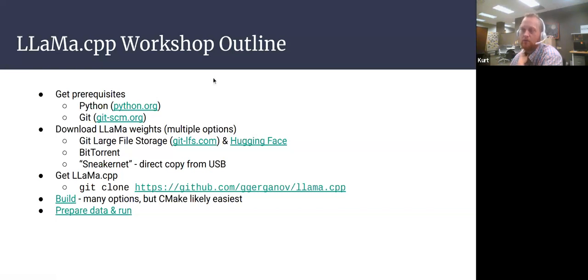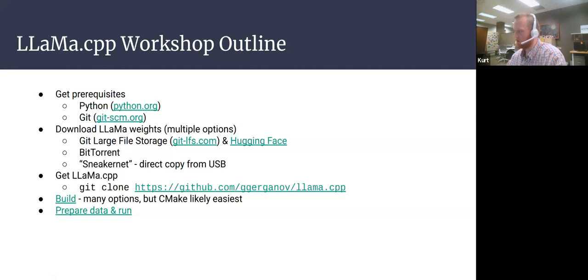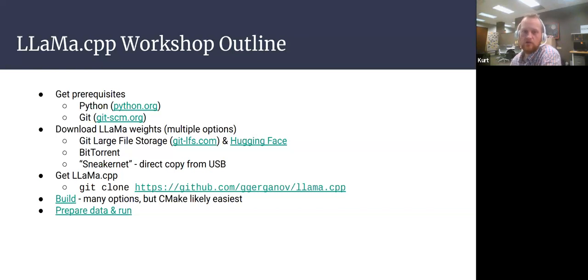Once those are downloaded, the next step is to get the data — the weights. The smallest one is a 3 billion parameter model, and it's 13 gigabytes. So downloading that may take a while. The goal today is that since you may not finish before the end of lunch, I'll share these slides and be open to questions for completing it later.